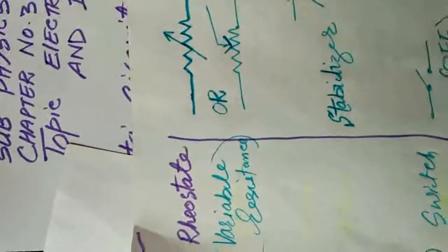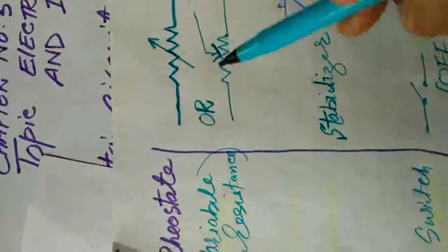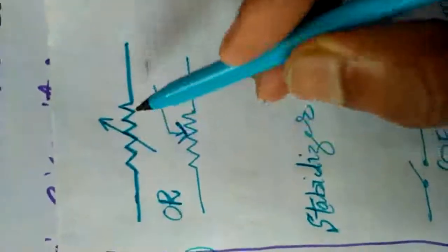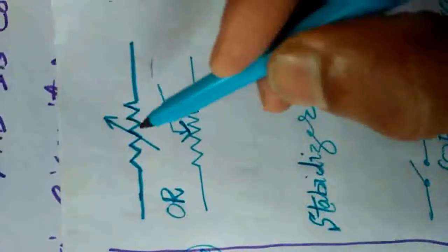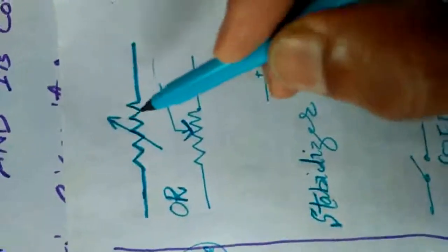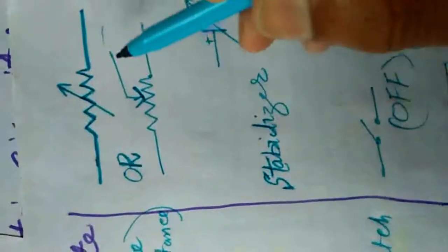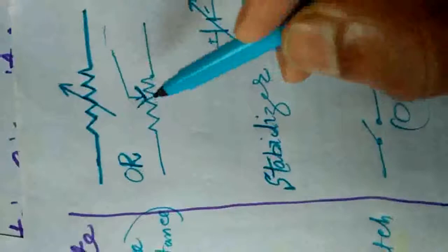The next component is the rheostat. A rheostat is a device whose resistance is variable — we can change its resistance. The symbol of the rheostat is drawn by taking a resistance symbol and placing an arrow across it. The rheostat can also be represented with an arrow drawn from above the resistance symbol.